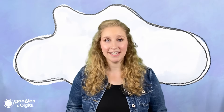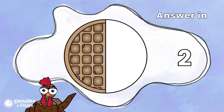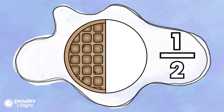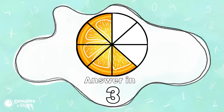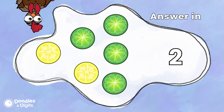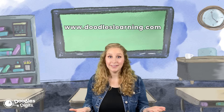Now that we've named a couple fractions together, let's see if you can do a couple on your own. Our fractions are: five eighths, one half, five eighths, four sixths of this group are limes — or if you did the lemons, two sixths are lemons. How'd you do? Did you get them all correct?